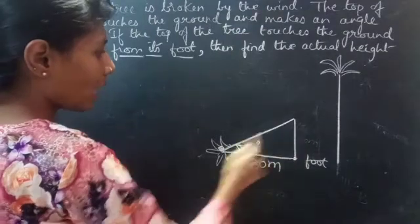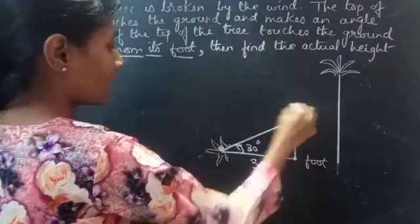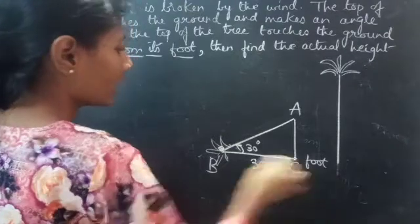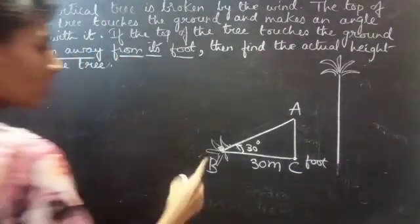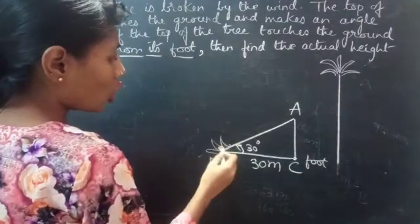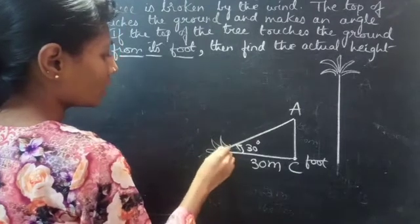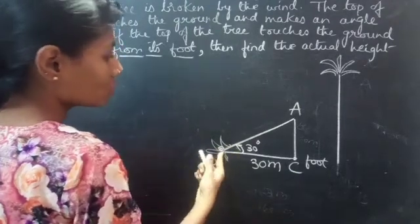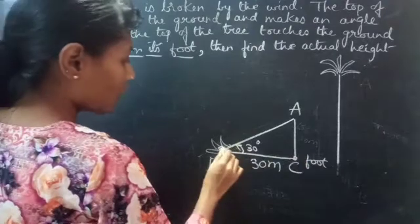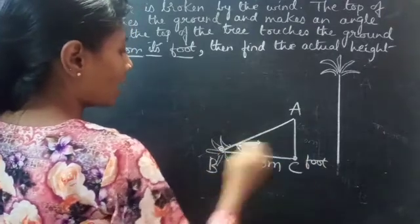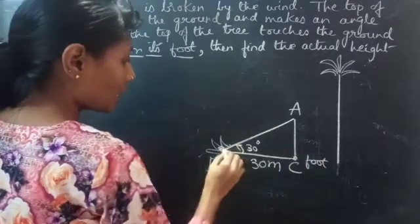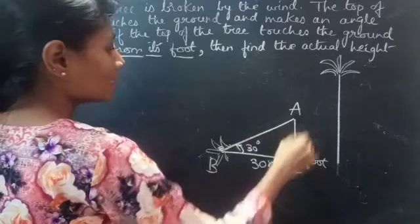So this is the actual height. Let us name it as ABC. A right angle triangle ABC. This is the top of the tree touching the ground, and this is the foot of the tree. We have to find the actual height, that is AB plus AC.